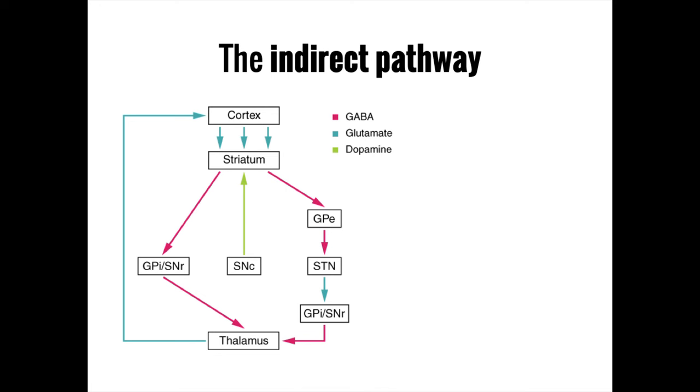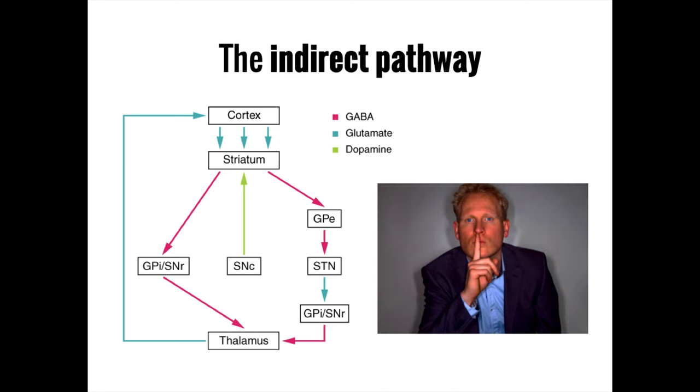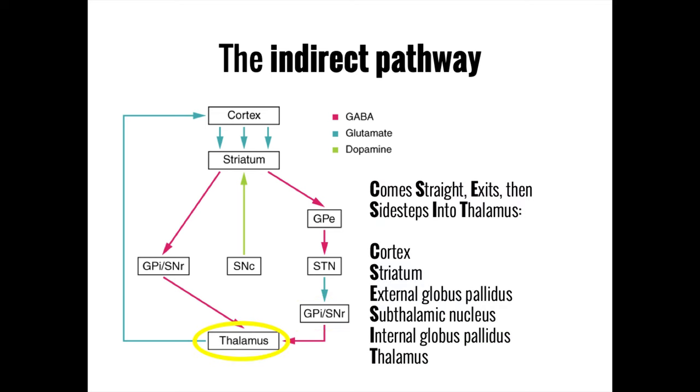In contrast, the indirect pathway takes a longer route through the basal ganglia and generally exerts a diminishing or inhibitory effect on the initial motor signal. For example, if we are petting the dog too hard and should back off a little. The indirect pathway starts out similarly to the direct pathway in that the signal is generated in the cortex and travels to the striatum. However, it then exits the direct pathway into the external globus pallidus before traveling to the subthalamic nucleus, the internal globus pallidus, and finally the thalamus. You can remember this route by thinking that the indirect pathway comes straight, exits, then side steps into the thalamus.